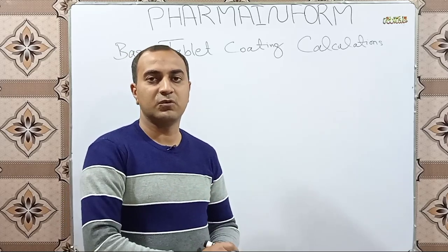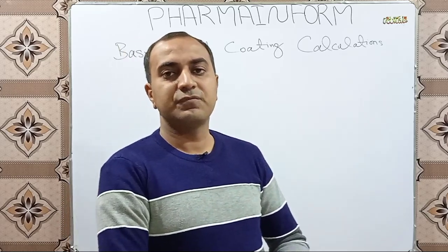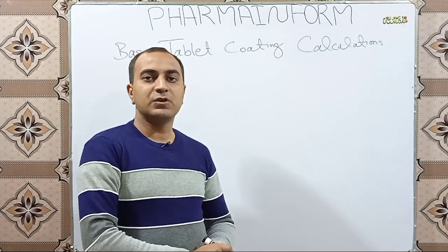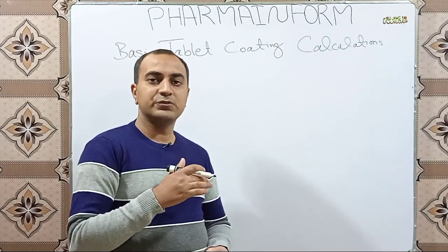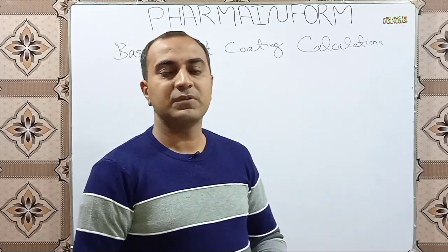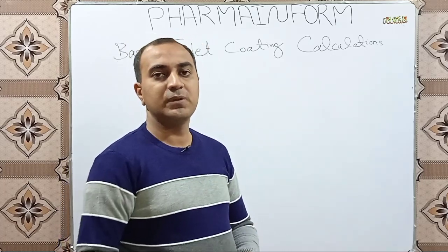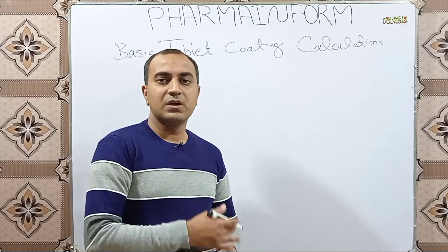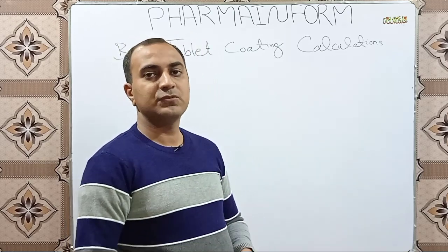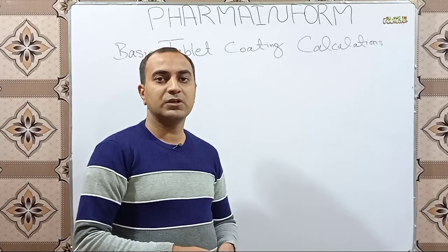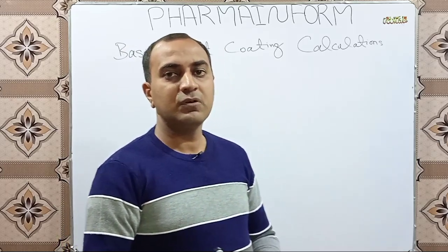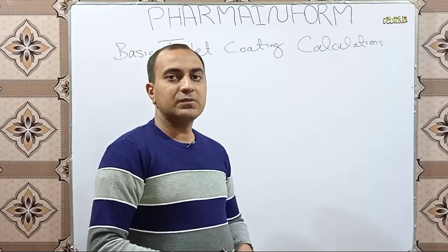As you know, for different types of coating such as film coating or sugar coating, we can use different percentages of coating material. For film coating we can use 1 to 5 percent, and in the case of enteric coating we usually use 8 to 10 percent or 12 percent coating material to achieve the desired results.